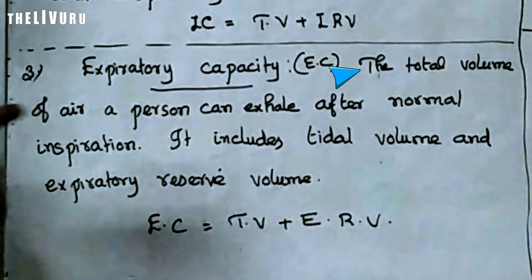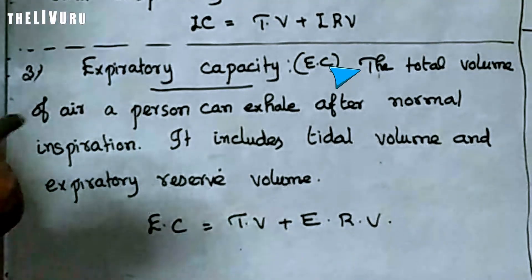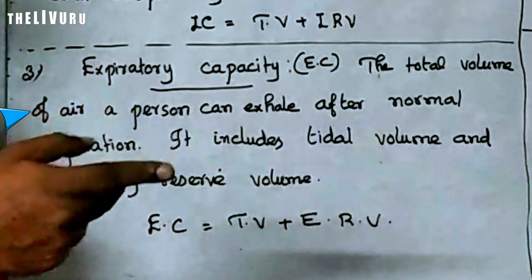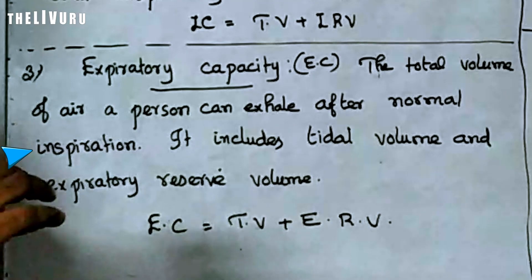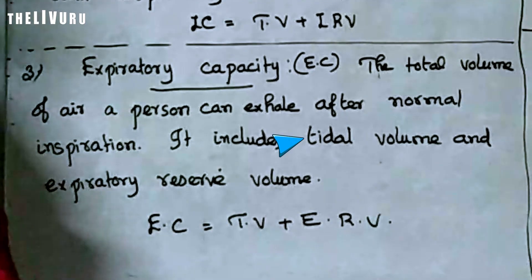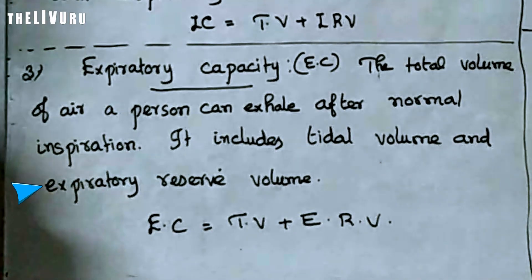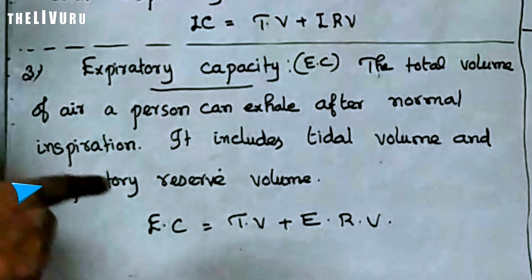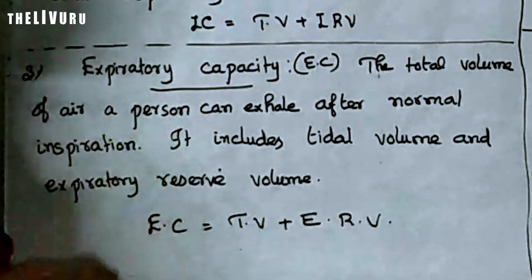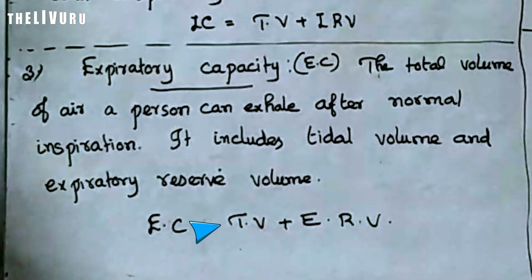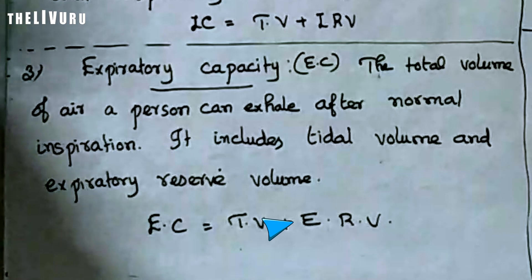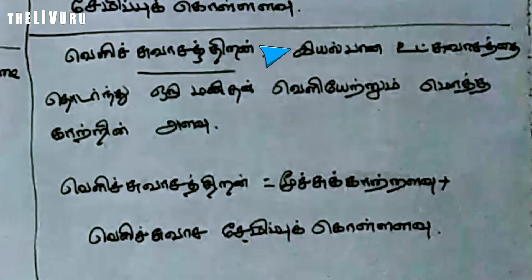Expiratory capacity is the total volume of air a person can expire after normal inspiration. That includes tidal volume plus expiratory reserve volume.